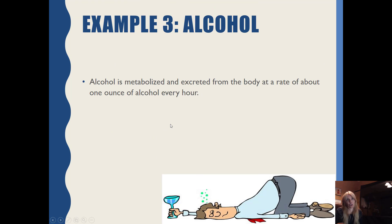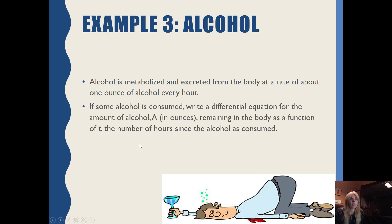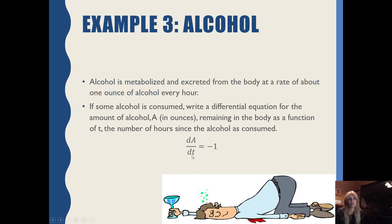Alcohol is metabolized and excreted from the body at a rate of about 1 ounce per hour. If some alcohol is consumed, the differential equation for the amount of alcohol is simply: the change in the amount over change in time equals negative 1 ounce per hour. Notice it leaves at a fixed rate with no proportion or percentage of what's present. This section is about setting up differential equations and using them — like we did with the population — with Euler's method for approximation.